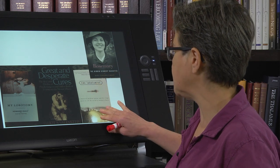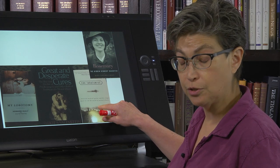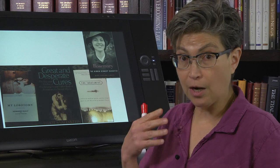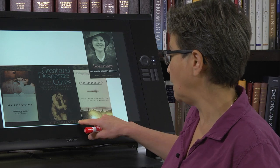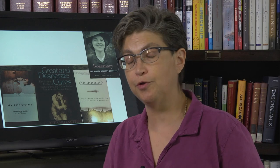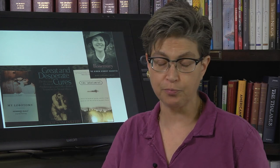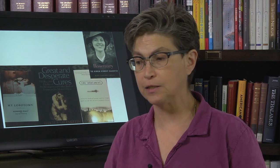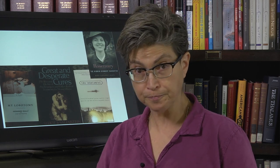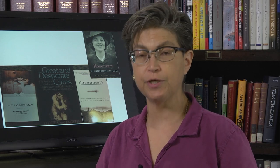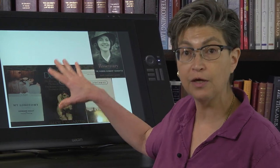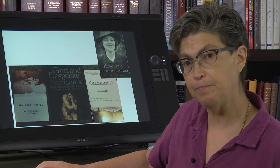The Lobotomist by Jack El-Hai is a history of Walter Freeman and his choices as he popularized the lobotomy throughout the United States. And Great and Desperate Cures: The Rise and Decline of Psychosurgery and Other Radical Treatments for Mental Illness by Elliot Valenstein is a stupendous book that puts lobotomy into a broader context and has a lot of food for thought for modern approaches to psychosurgery. We don't do lobotomies anymore, but there are modern versions of psychosurgery, and these are things you should form your own opinions about — these books can help you become informed.